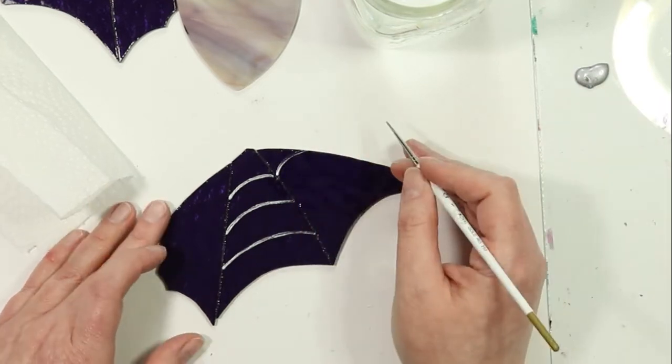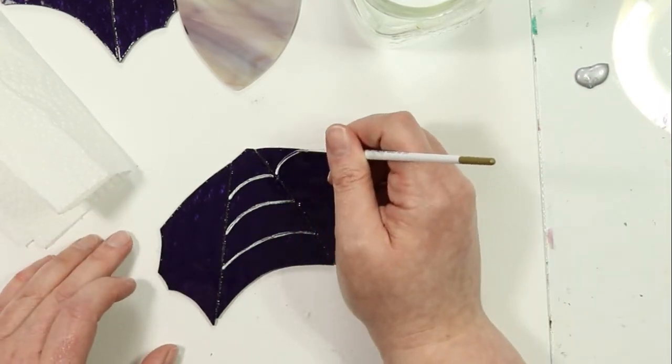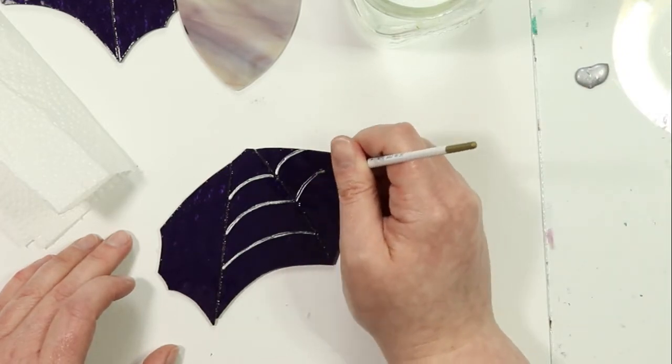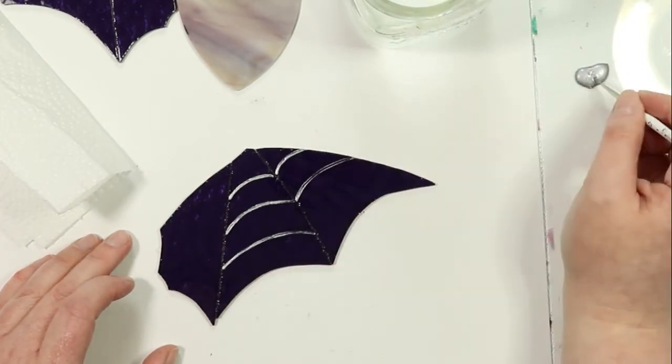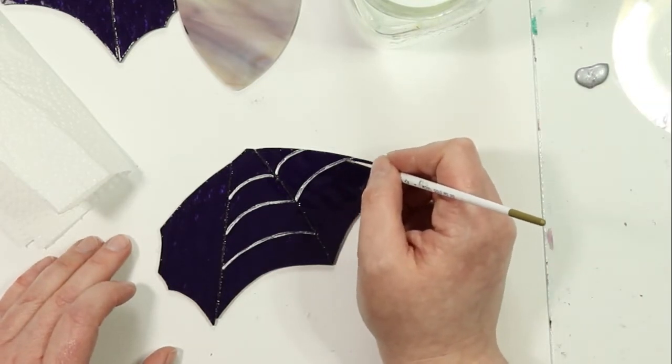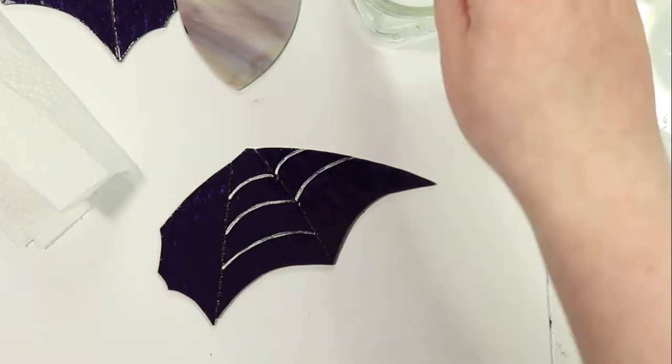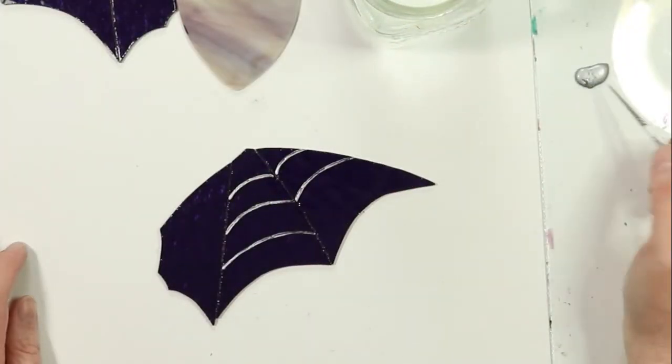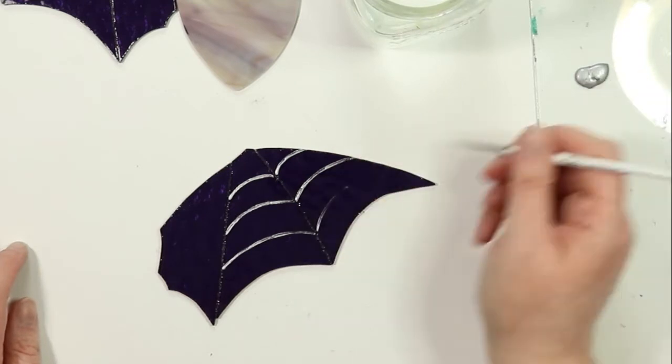But you want to get as even a coat as you can on the first go round, but just don't be discouraged if you notice it's really not going on evenly. So there I was cleaning my brush. You'll find that the paint starts to dry out a little bit on your brush, so you just clean it off with water.